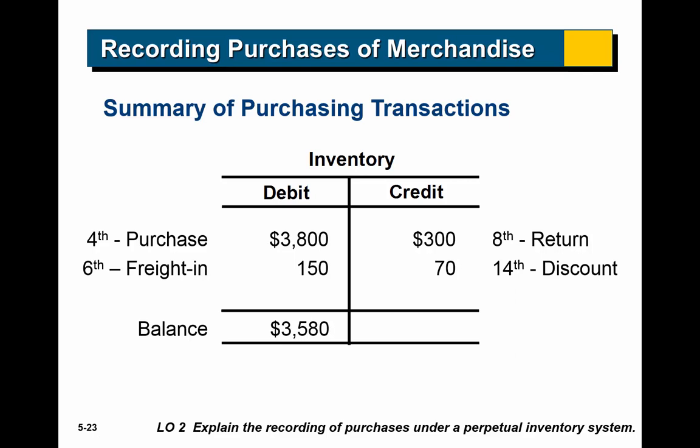Here's a summary of all the purchasing transactions in this example. On May 4th, they purchased for $3,800 — inventory debited $3,800. On May 8th, a return of $300 — inventory credited $300. On May 6th, freight charges of $150 — inventory debited $150, increasing cost. On May 14th, they took the $70 discount — inventory credited $70. In the end, they have $3,580 as a debit balance in their inventory account, which makes sense since inventory is an asset on the normal debit side.